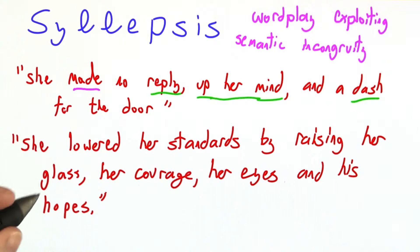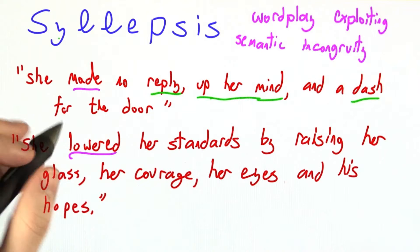Here's perhaps my favorite example from the same source. She lowered her standards by raising her glass, her courage, her eyes, and his hopes. This is a very good but very disconcerting poem, and a very lovely example of syllepsis.